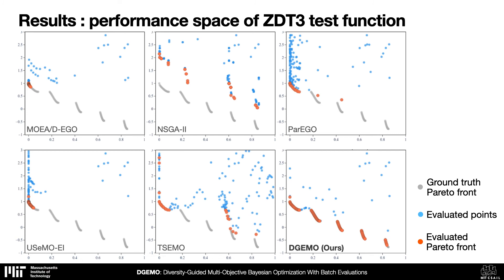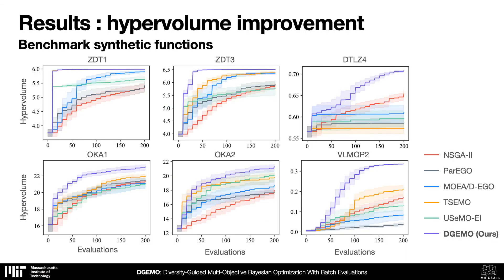To illustrate the advantage of our solver and selection strategy, here we show a performance space comparison of a standard test function against other popular and state-of-the-art methods. Our approach, shown on the bottom right, reaches the ground-truth Pareto front much faster without getting stuck in local minima. We perform extensive evaluations on synthetic test functions and monitor the hypervolume improvement. Our algorithm, shown in purple, consistently outperforms all other methods.